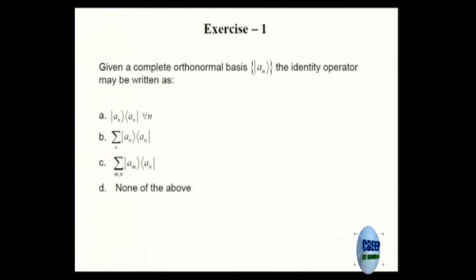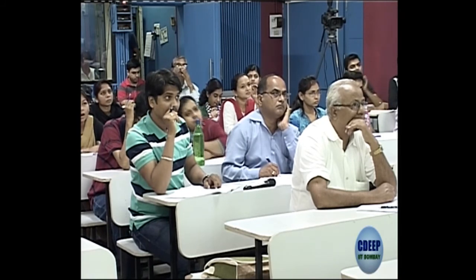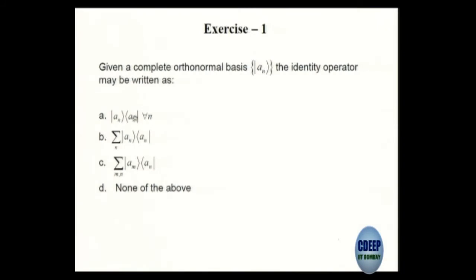It is not exactly a democracy — there is a right answer. One thing I want to point out as you are thinking: earlier I had the bra first and the ket next to get an inner product, which gives you a final number — that is like 1 by 3 times 3 by 1 giving you 1 by 1. Now I have the ket first and the bra next: that is 3 by 1 times 1 by 3, which gives you a matrix. One of these will give you the identity operator — you have to figure out which one.